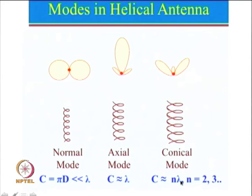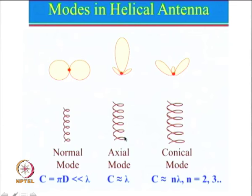When c is approximately equal to n·lambda, where n can be 2, 3, or more, we see a conical pattern — neither maximum along the axis nor perpendicular to it, but in a conical shape. However, I want to tell you that this mode is not really used most of the time. We will concentrate mainly on normal mode and axial mode.